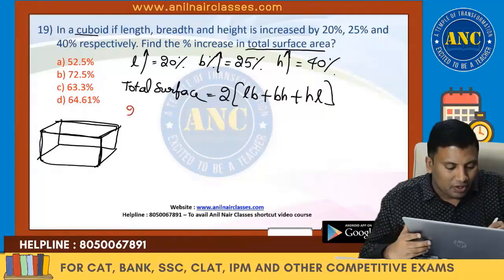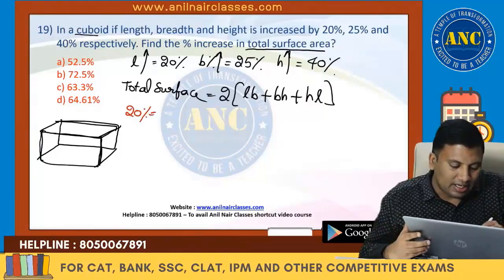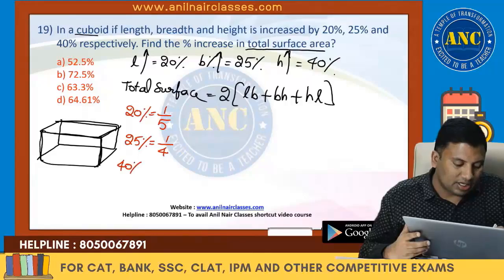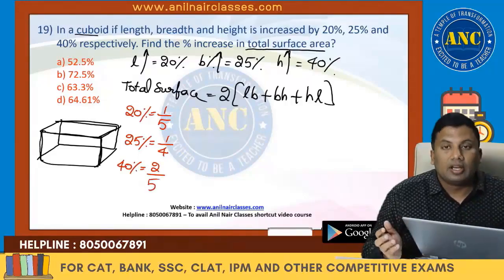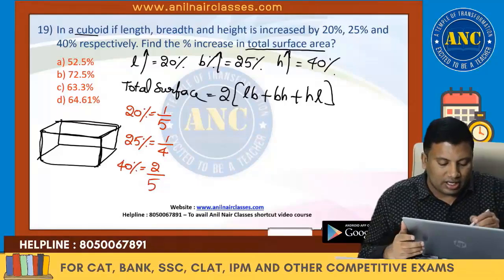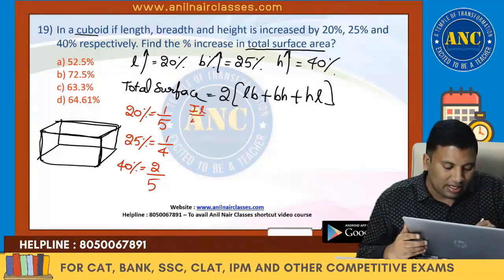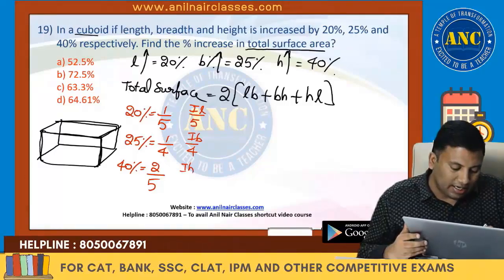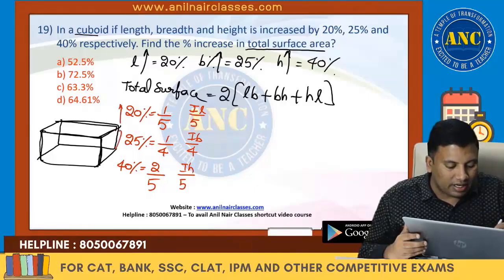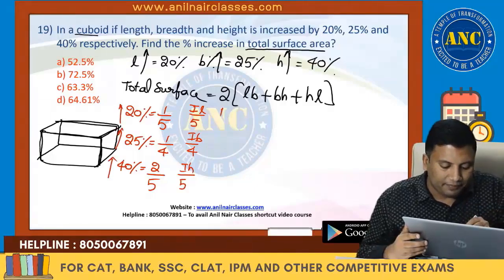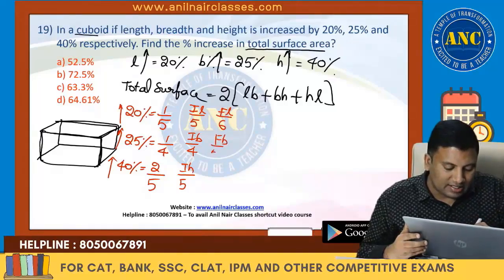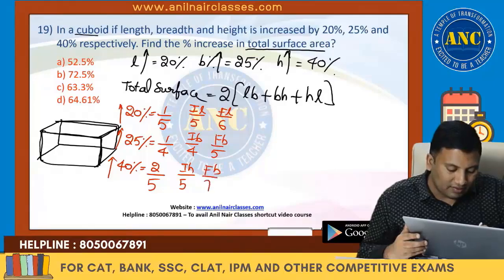20%, 25%, 40%. 20% is 1 by 5. 25% is 1 by 4. 40% is 2 by 5. The denominator always denotes the initial value. So initial length is 5, initial breadth is 4, initial height is 5. All are increased. Final length: 1 increase → 6. Final breadth: 1 increase → 5. Final height: 2 increase → 7.